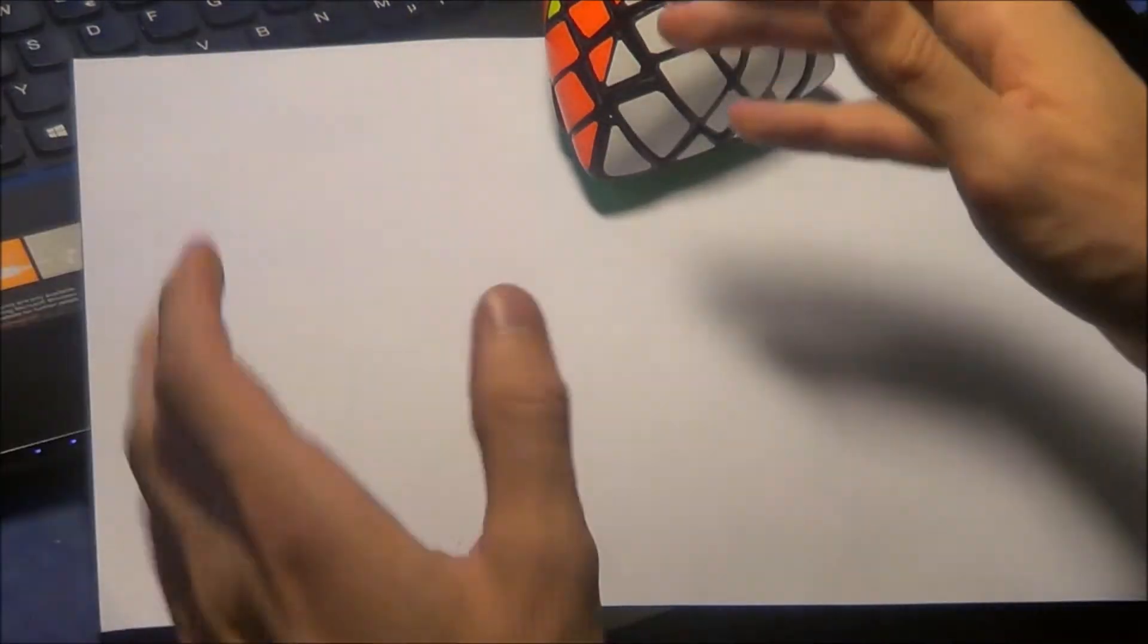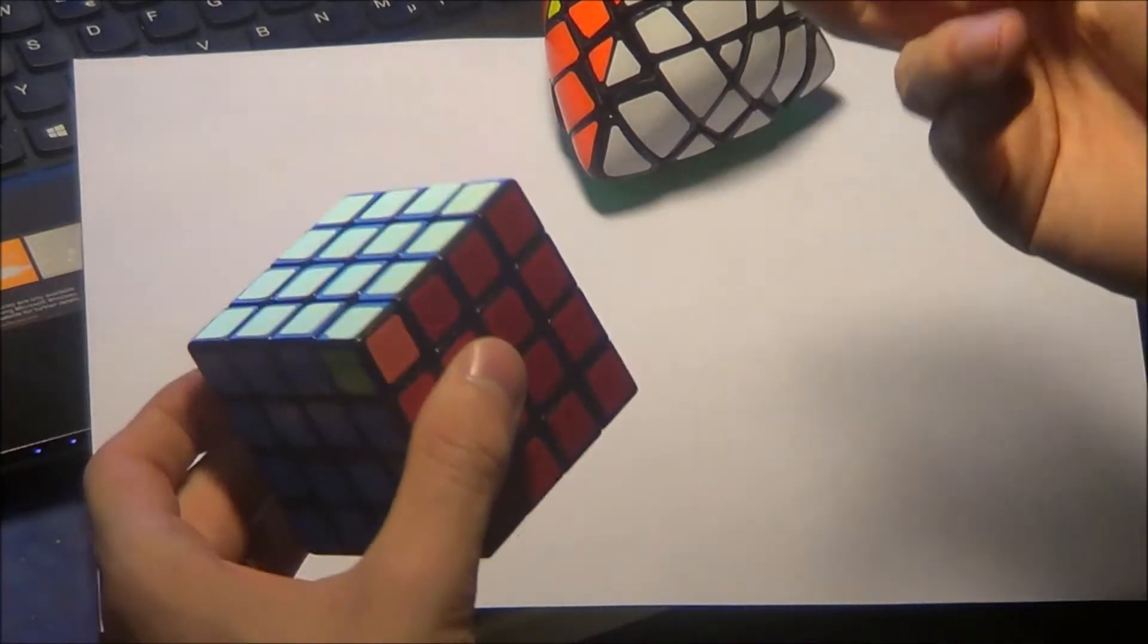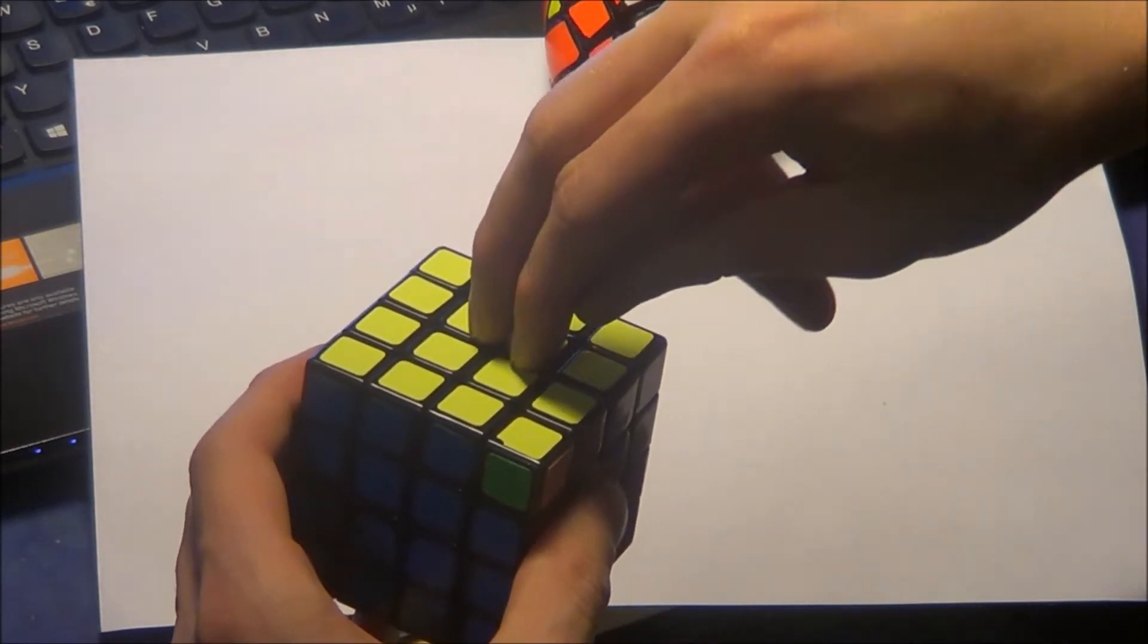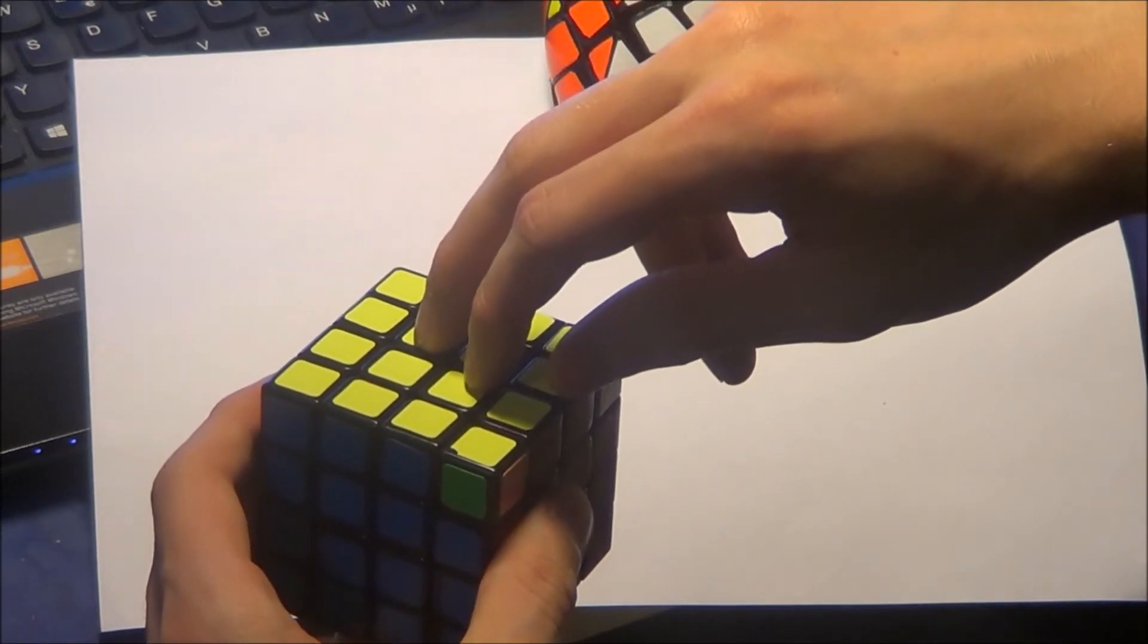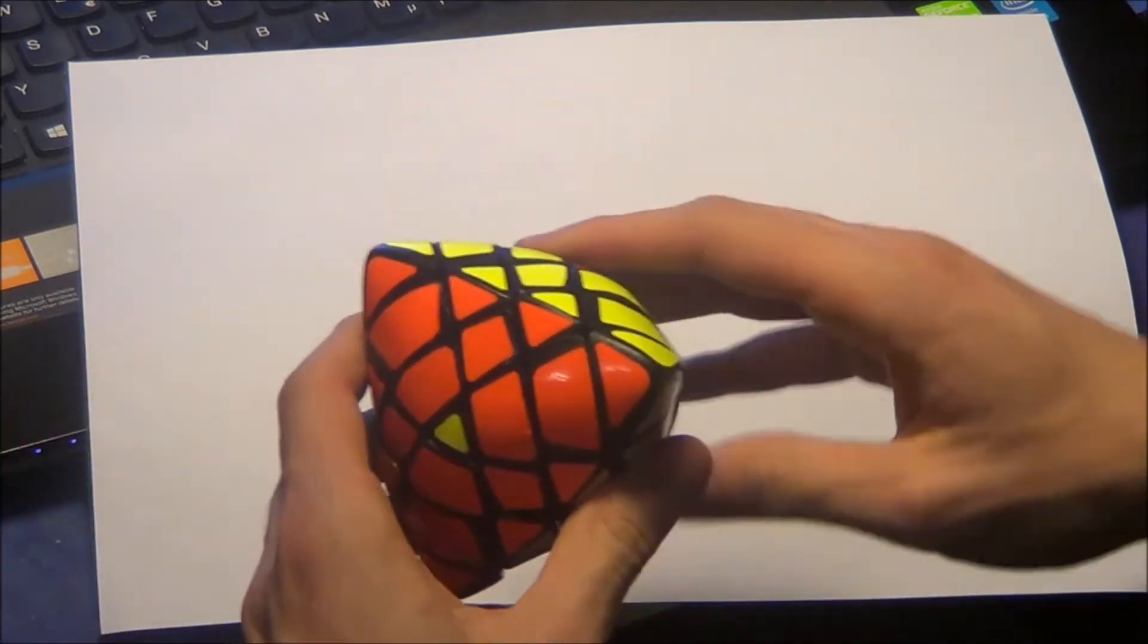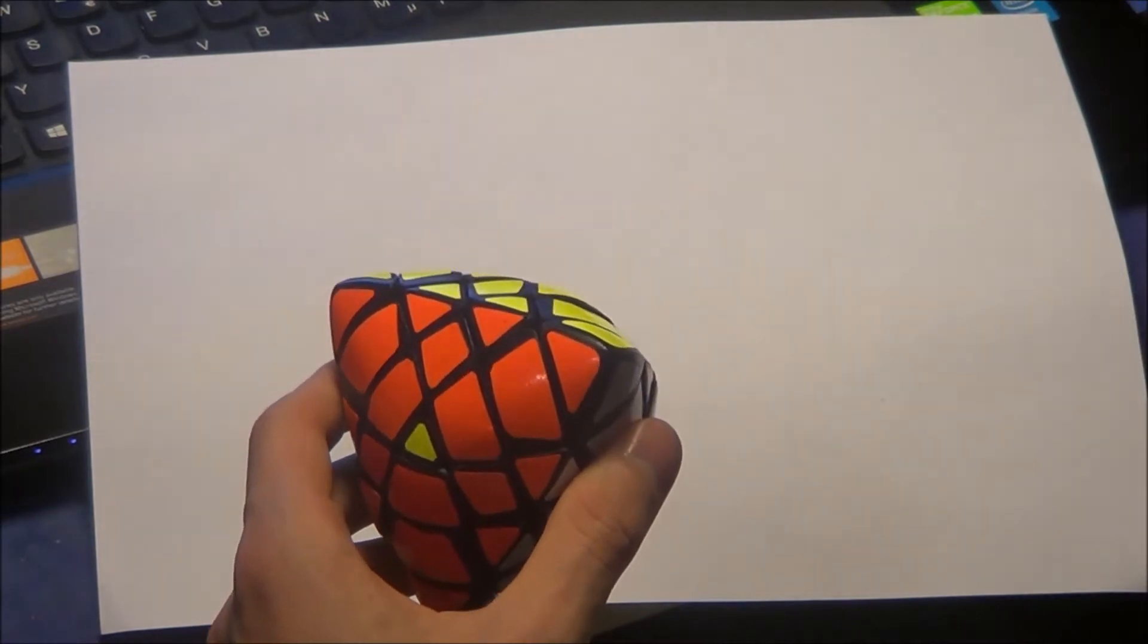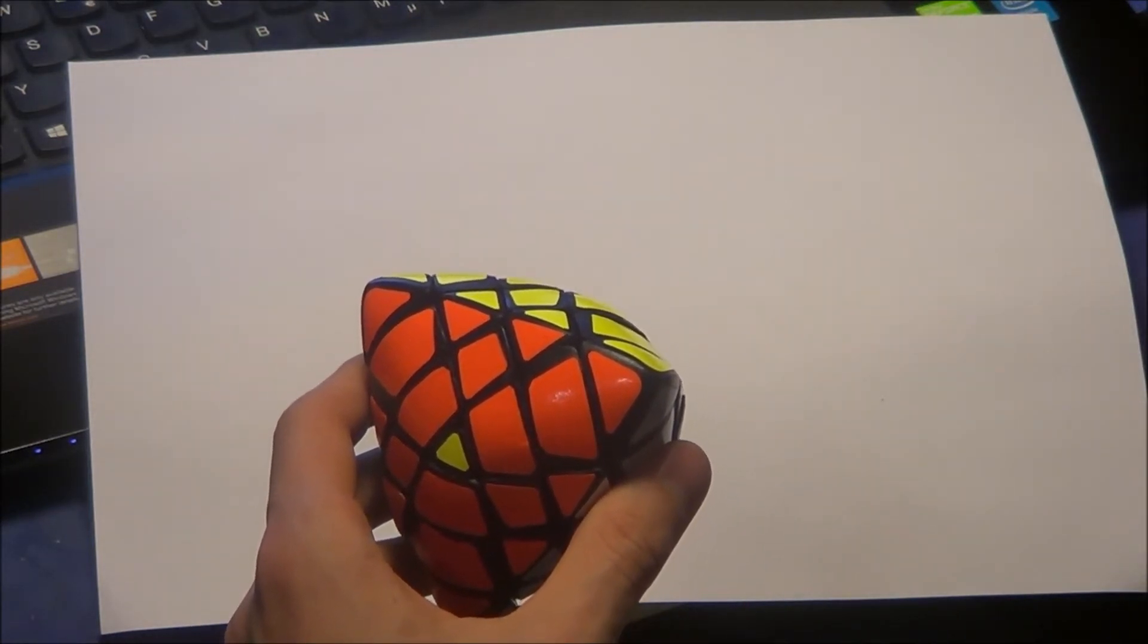But you can't solve it in the same way because on the 4x4 you are switching two corners and also two of the yellow centers. This isn't possible on the normal Megamorphics because of the different shaped centers we have on this puzzle here. So this algorithm is very long and not so easy to remember.